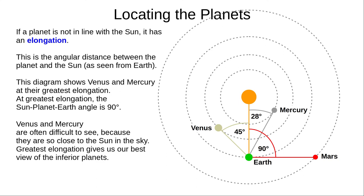Of course, most of the time, planets aren't in line with the Sun. They have an elongation, which is the angular distance between the planet and the Sun. In this diagram, we see Venus and Mercury at their greatest elongation. These planets can be hard to see as they're usually very close to the Sun in the sky. Greatest elongation gives us our best view of the inferior planets. Note that at greatest elongation, the Sun-Planet-Earth angle is 90 degrees. When a superior planet is at elongation 90 degrees, the Earth would be at greatest elongation to observers from that planet.